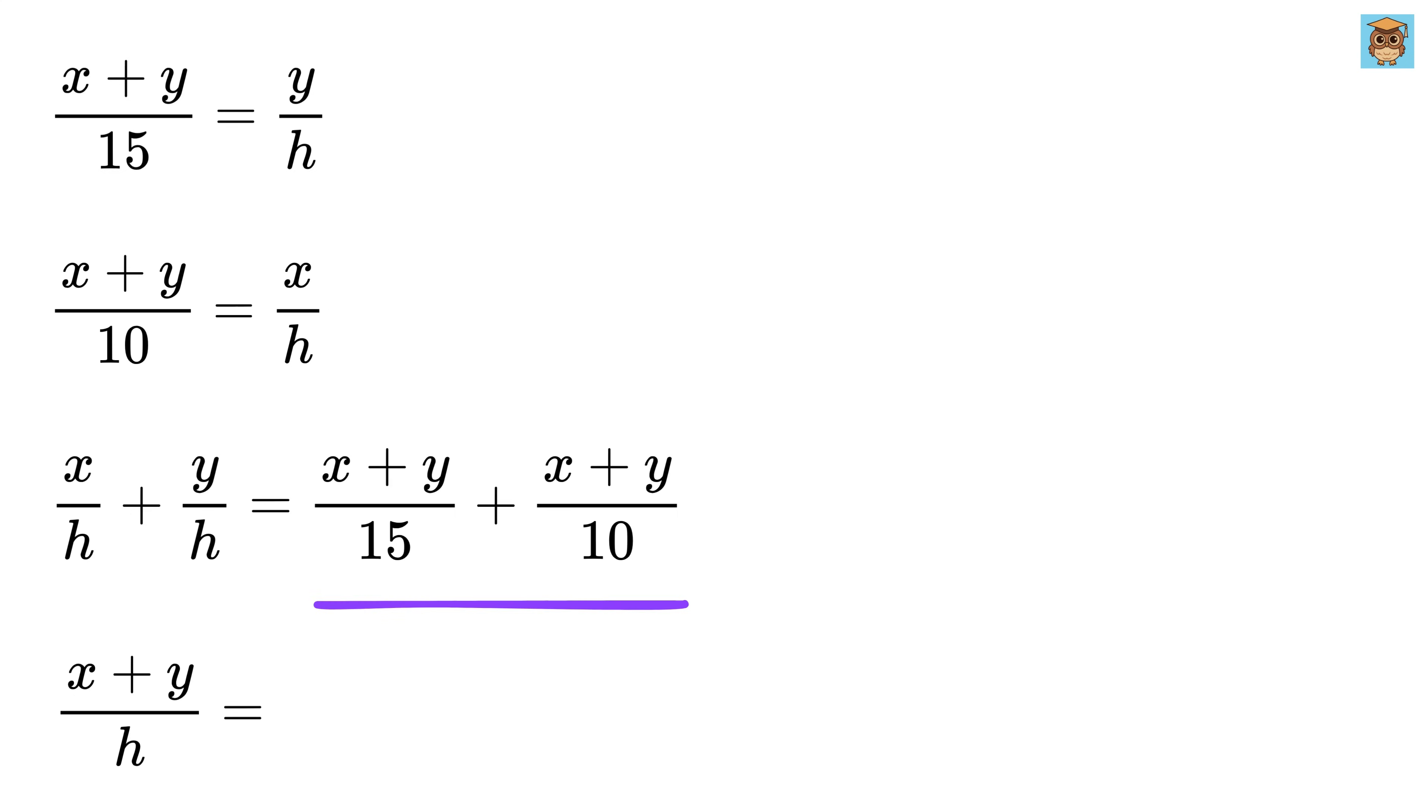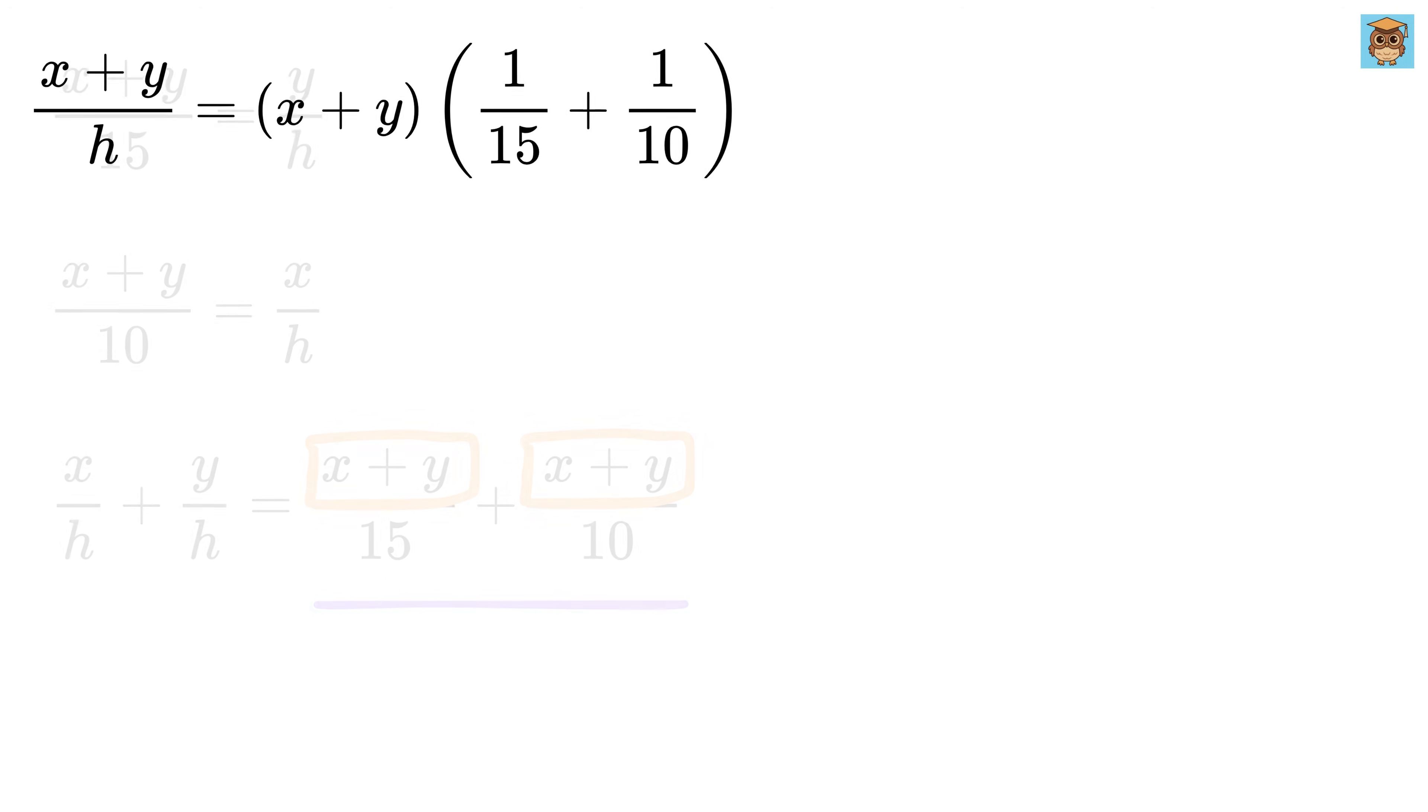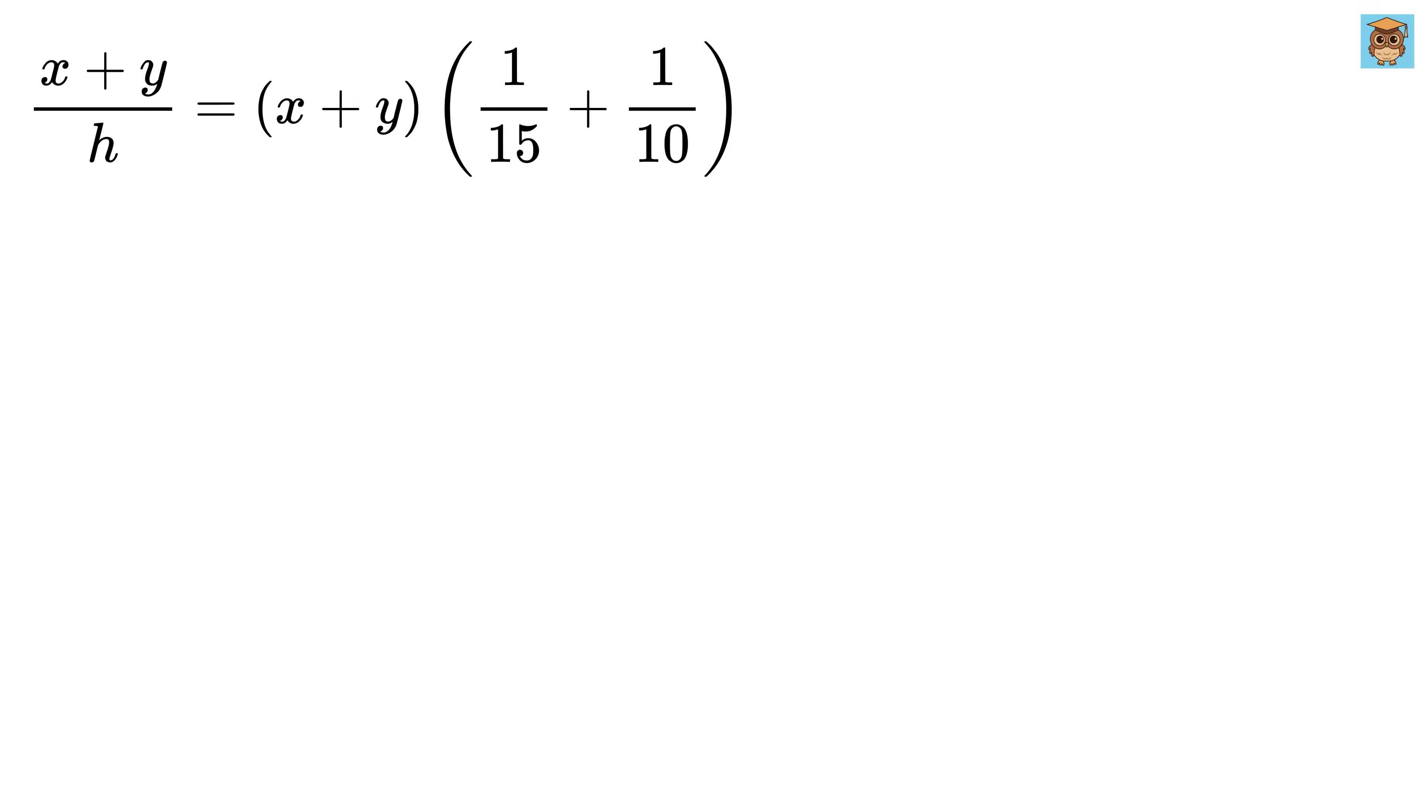On the right-hand side, both terms also have the same numerator X plus Y. So, we factor that out and write it as X plus Y times 1 over 15 plus 1 over 10. Now, simplify the values inside the bracket. 1 over 15 can be written as 2 over 30, and 1 over 10 can be written as 3 over 30.